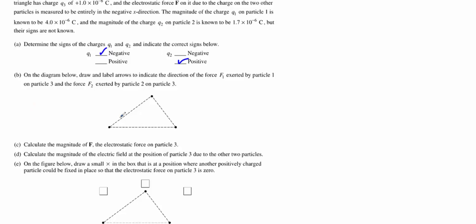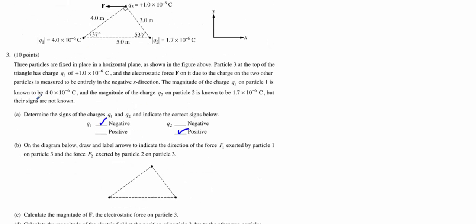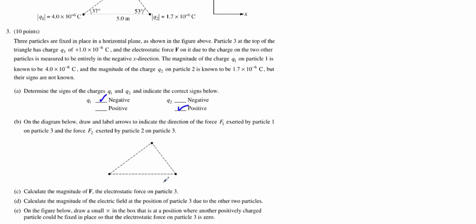Now we're going to do the direction of F1 exerted by particle 1 on particle 3 and particle 2 on particle 3. Again, if we were to label them the way they do, 1, 2, and 3, so this would be charge 1, charge 2, and charge 3. Charge 2 is repelling charge 3, so we're going to get F2 is like this. And F1 is pulling it towards it.